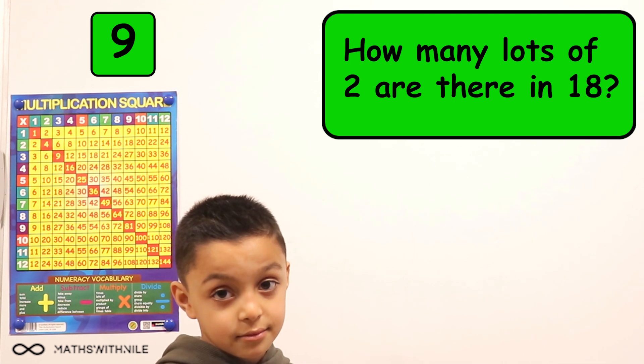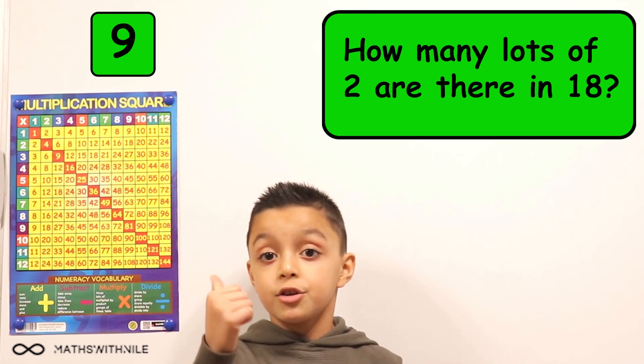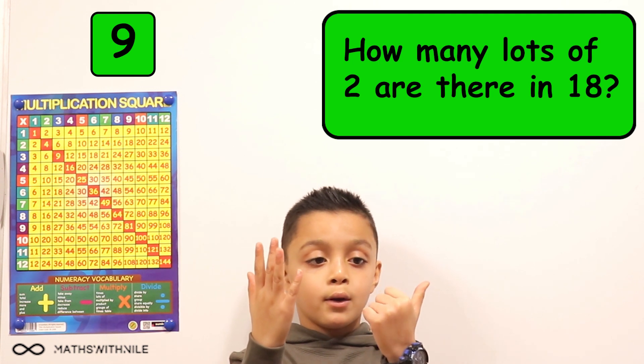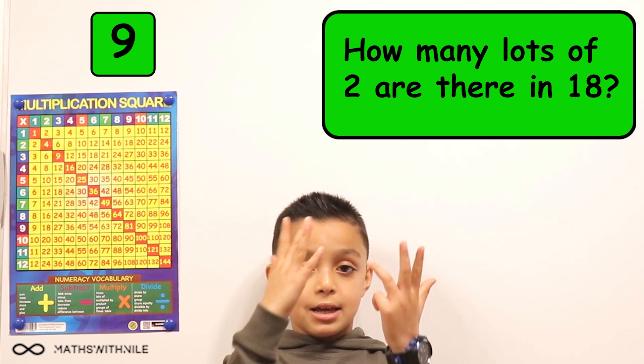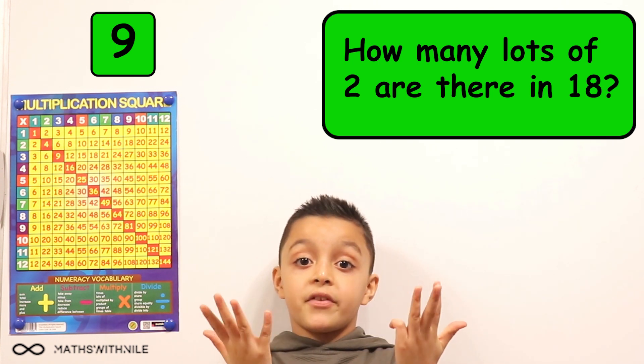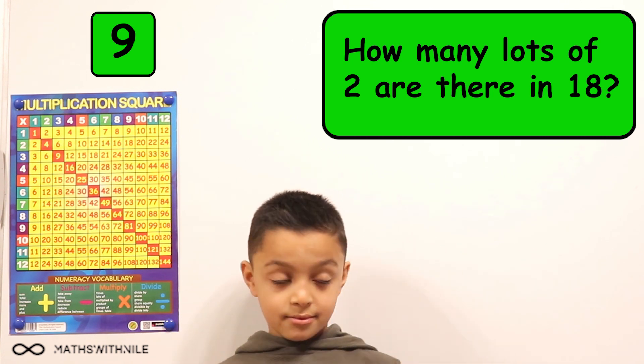Can you do another way for me? Can you count up in twos on your fingers? Okay. Two, four, six, eight, ten, twelve, fourteen, sixteen, eighteen. And I also got nine, so that means it's correct. Okay, brilliant.